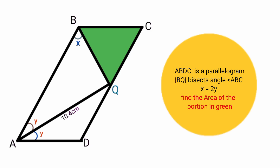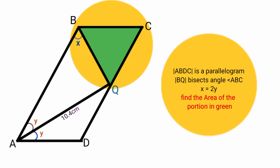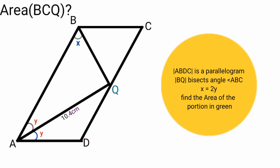We are asked to find the area of the figure shown here in green color. The figure is a triangle, so we need to find the area of triangle PCQ. The formula for the area of a triangle is half base times height.